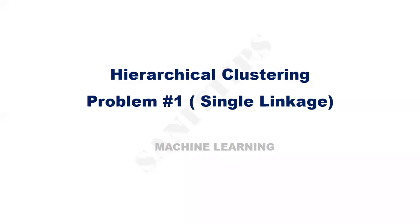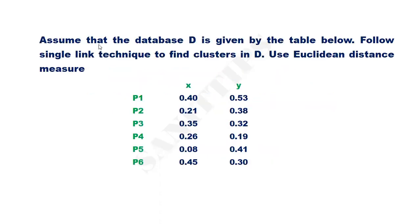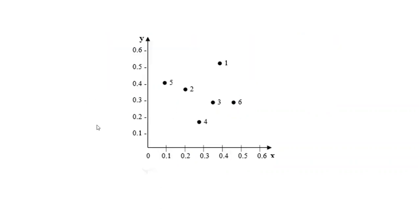In this video, let us see a clustering problem using single linkage hierarchical clustering method. Assume that the database D is given by the table below. Follow single linkage technique to find clusters in D, using Euclidean distance measure. Here is a scatter plot of the points on the 2D plane.